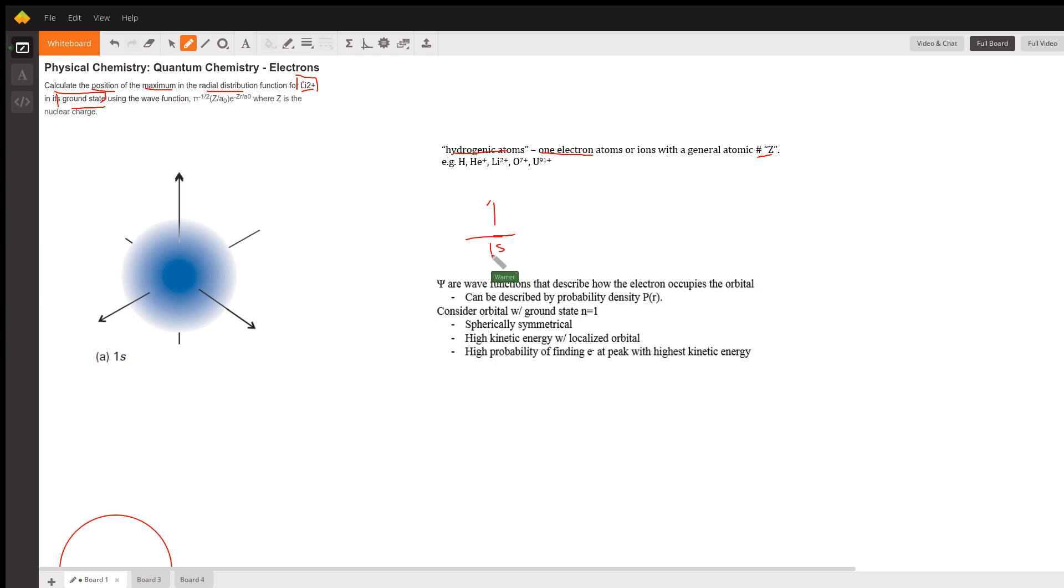So when we think of a 1s orbital, we immediately think of a sphere. And the probability of finding an electron is going to be dependent on finding it within the volume of this certain sphere. And there is, I believe, a 90% average of finding an electron within this certain sphere. The other 10%, it could be literally anywhere.